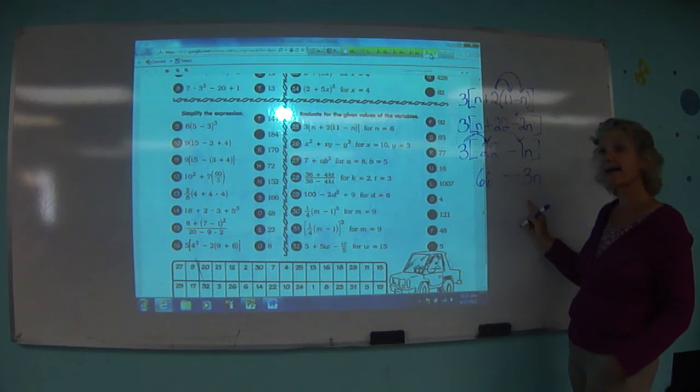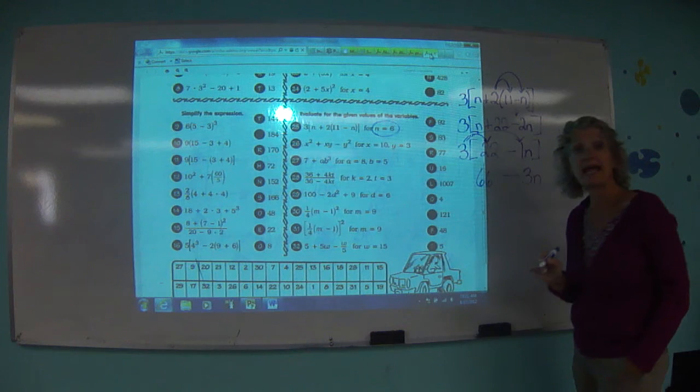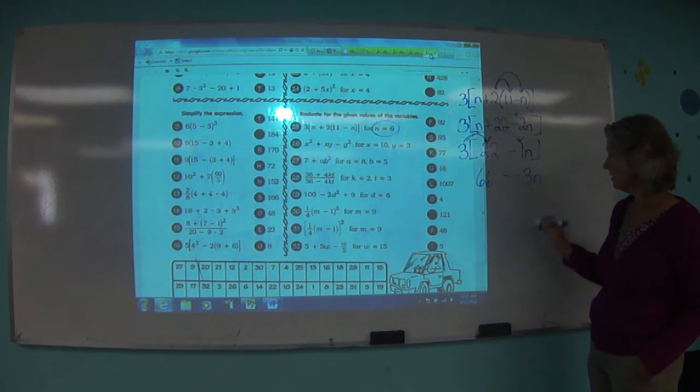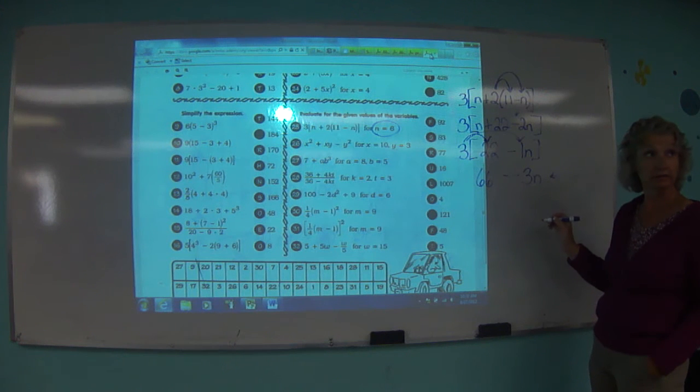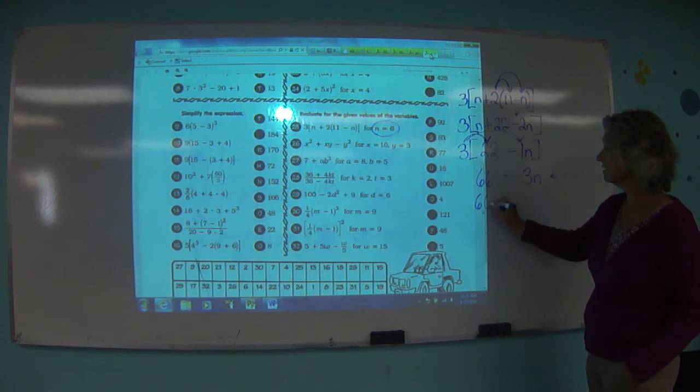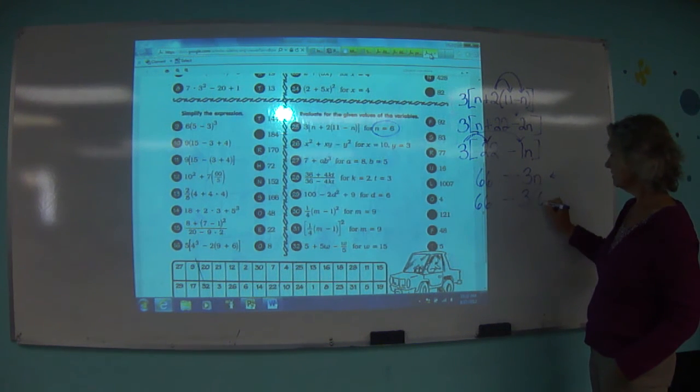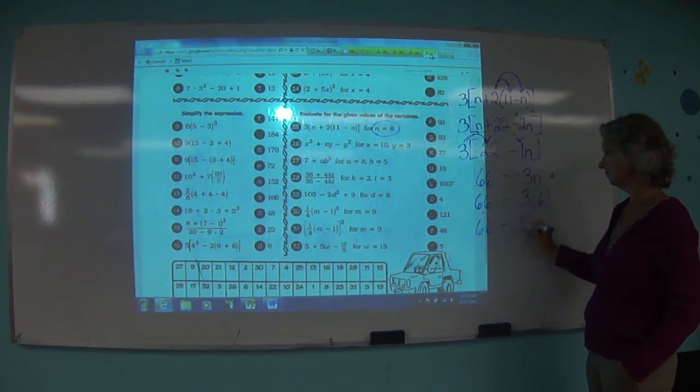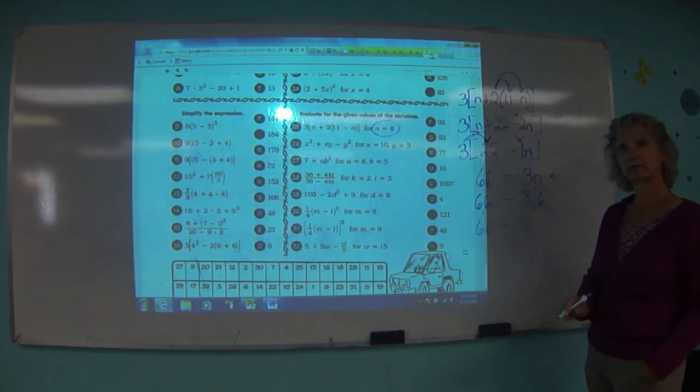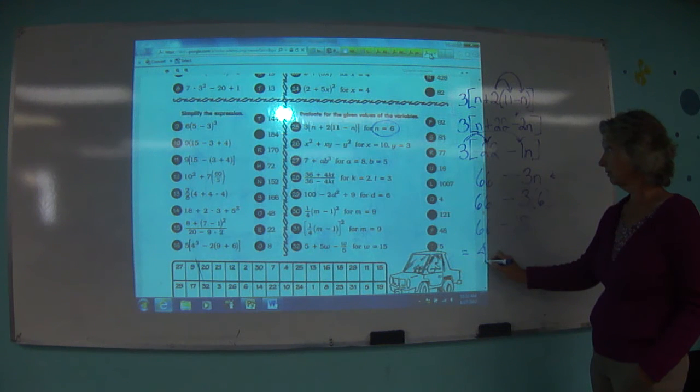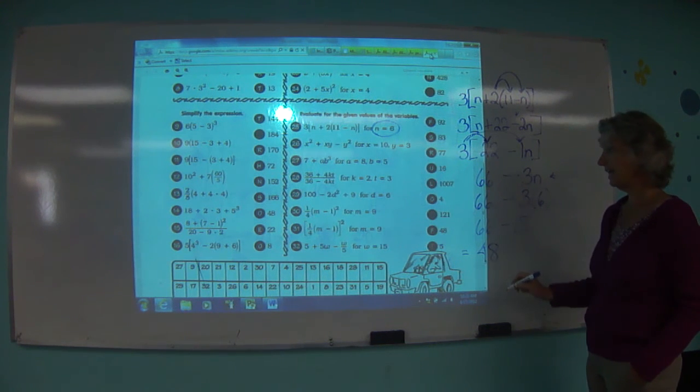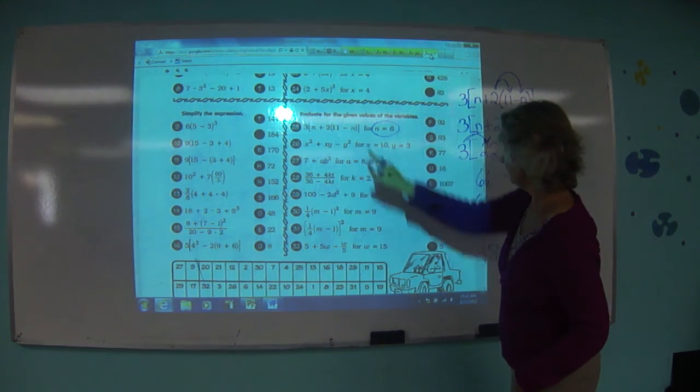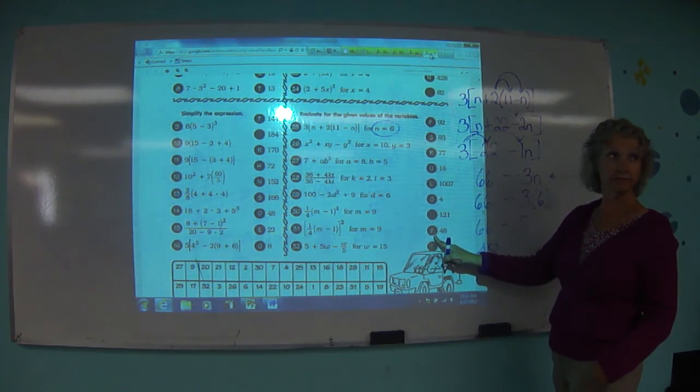But what did they tell us at the beginning? n is equal to 6. So this is the first part of our answer. Then we do 66 minus 3 times 6. So 66 minus 18 equals, what's our answer? 48. So in box, in number 25, we write the letter F. That's it.